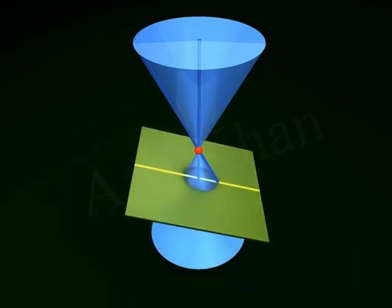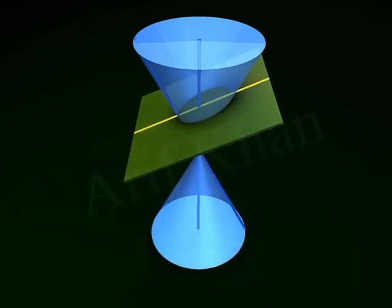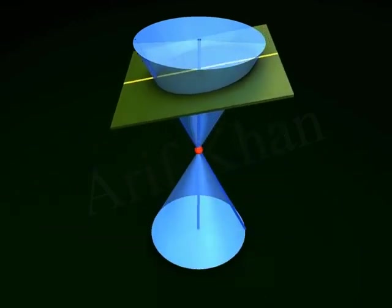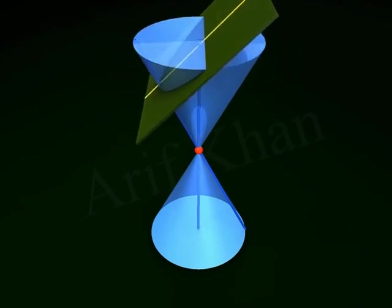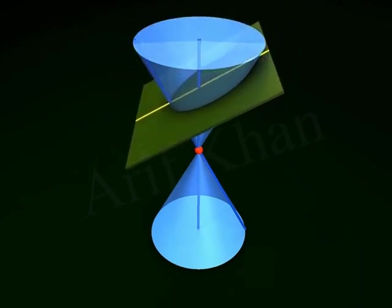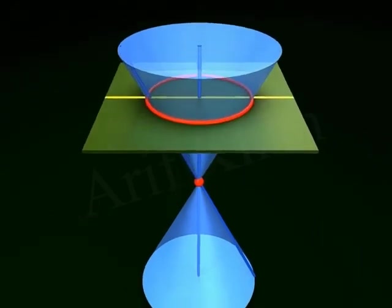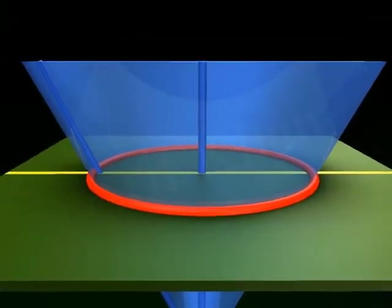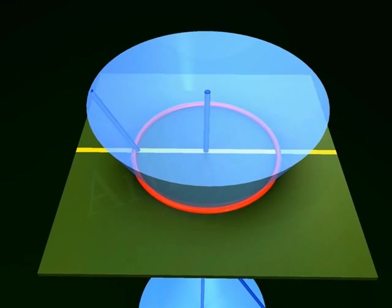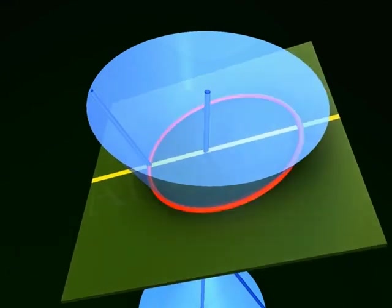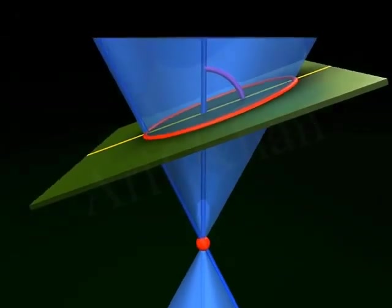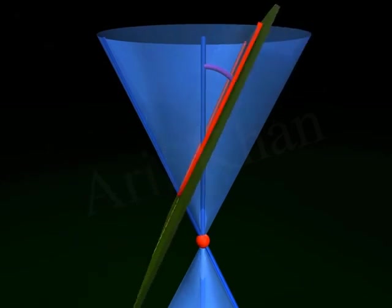If a plane intersects a double right circular cone, we get two-dimensional curves of different types. These curves are called conic sections. Depending on the angle made by the plane with the vertical axis of the cone, the plane can cut the cone in three different ways.